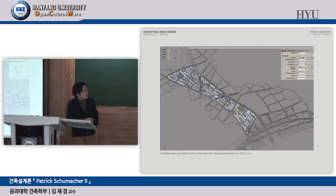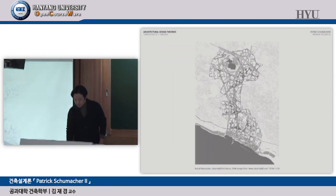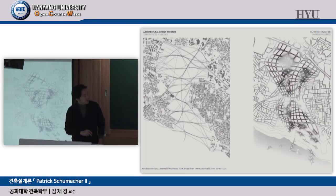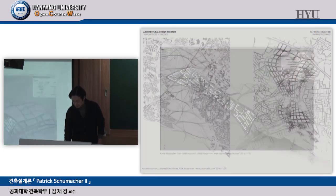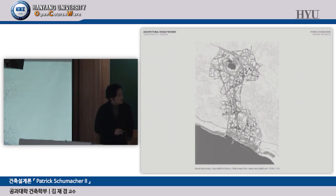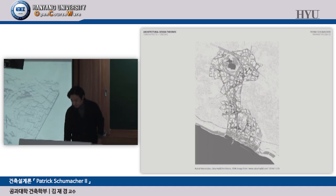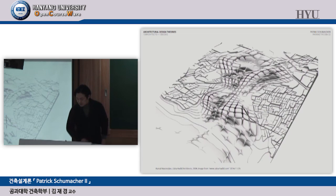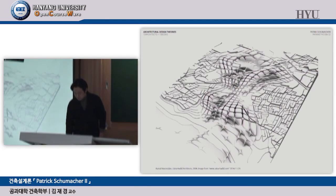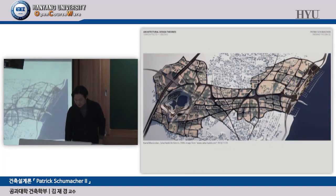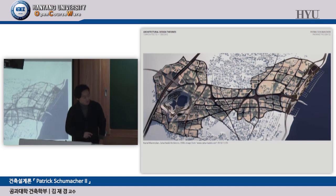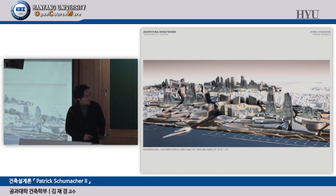Parameters like regulations, heights, and FAR allow the computer to automatically generate building forms. The final master plan is more realistic than the conceptual one. But looking at the 3D model rendering, it looks like a total disaster despite the interesting plan.